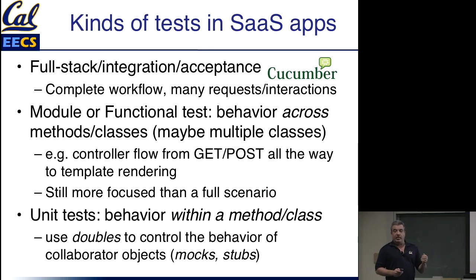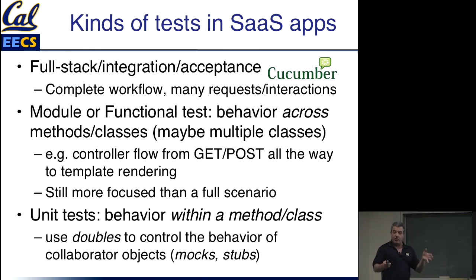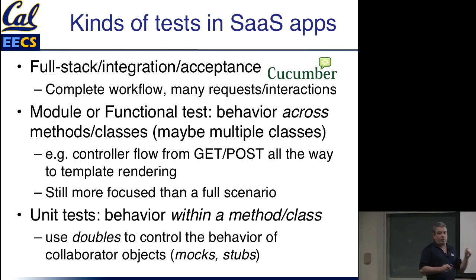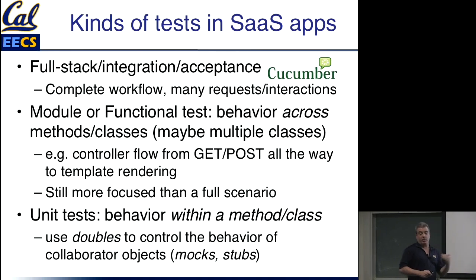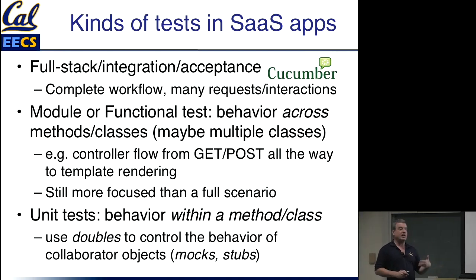Unit tests are the kind that, when you write simple tests in lower division courses, they tend to be more like this. You're usually testing a single method, function, or maybe a single class, and checking that the behavior of a single method does what you expect. In the simplest case, if the method is a pure function with no side effects, you just pass it some arguments and check if the right answer pops out. Those are the simplest tests to write.